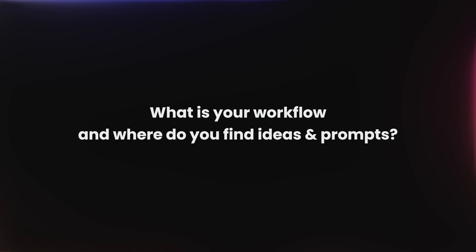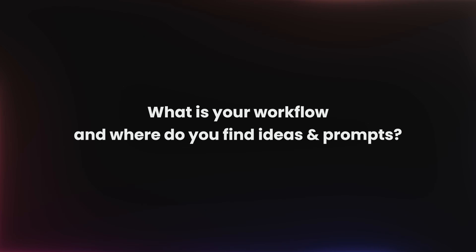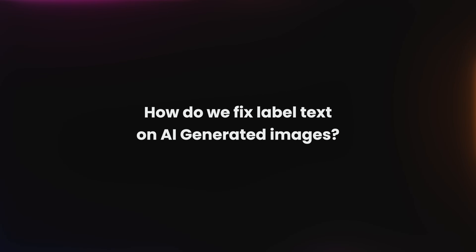There are two questions I get asked all the time in the comments, and I thought I would start the year out by addressing both at the same time. Question number one is can I show the details of my workflow, where I get ideas and reference images, and how I create the prompts. Question number two, probably the most asked, is how do we fix label text on AI generated images. So we're going to take a real client example, look at the workflow in detail, and show how to fix errors from AI generated tools.